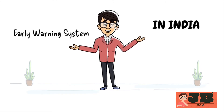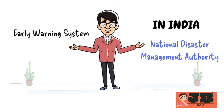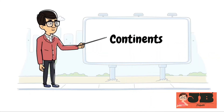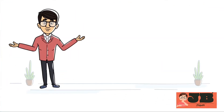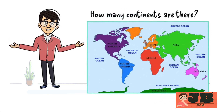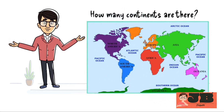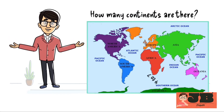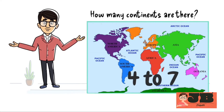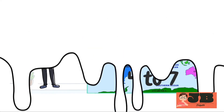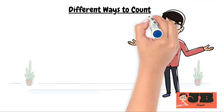India also has a National Disaster Management Authority to handle such disasters and minimize damage. Continents are another important aspect of this chapter. Do you know how many continents there are? When looking at a map of the oceans, you can see the continents, but counting them isn't straightforward, as the number can vary between 4 and 7, depending on how they are grouped. The number of continents may vary as there are different ways to count.